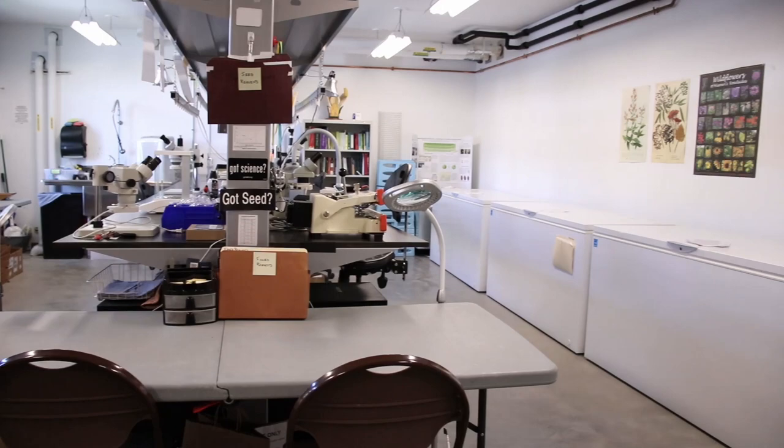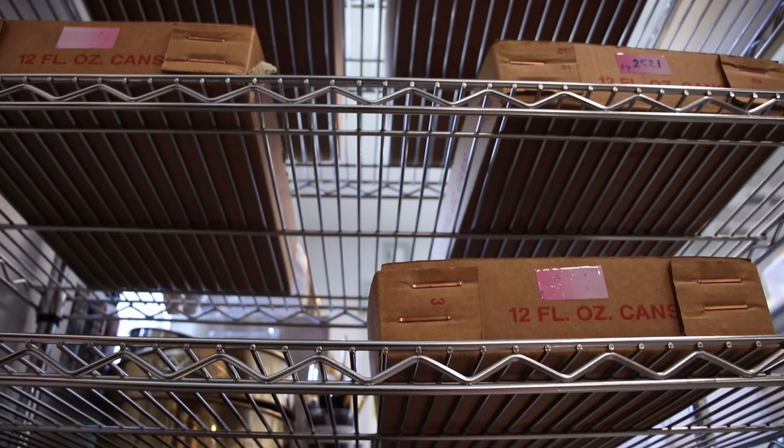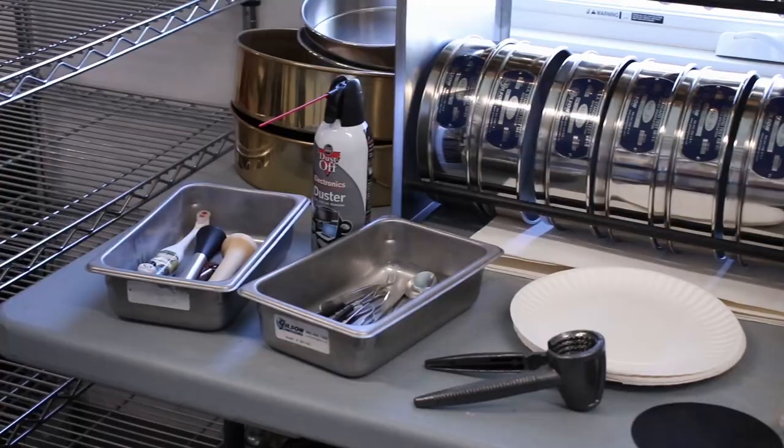We label and put them into cardboard flats to prevent the seeds from getting moldy. They will wait here on the wire rack until they're ready to be cleaned.